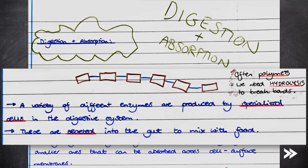A variety of different enzymes are produced by specialized cells in the digestive system. These are then secreted into the gut to mix with food and catalyze their respective hydrolysis reactions.